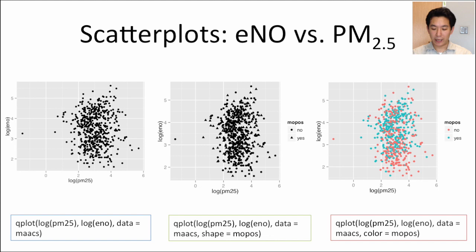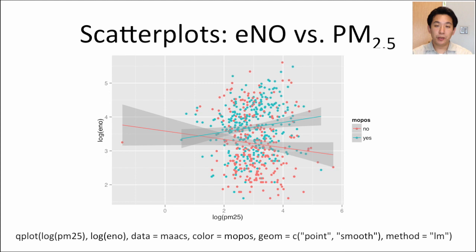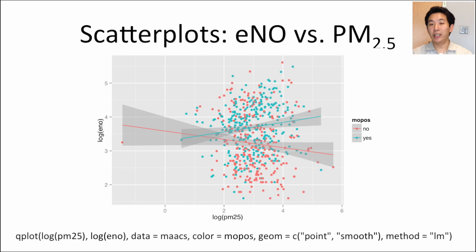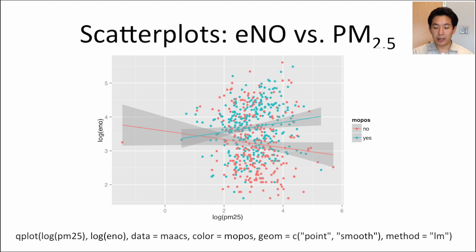To smooth the relationship between log PM2.5 and log ENO and see how it differs between groups, I set the geom to point and smooth and use a standard linear regression model by specifying method equals LM. Among the non-allergic children (red dots), there's a slight negative relationship that isn't particularly strong given the confidence intervals. Among the allergic children, there appears to be an increasing relationship between PM2.5 and ENO.